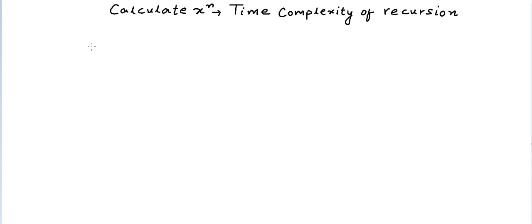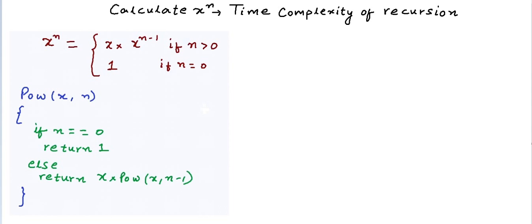The first approach we had seen was this: we defined the recurrence relation where we expressed x to the power n as x into x to the power n minus one, and n equals zero was our base condition. In the program, if n is zero, simply return one; else make a recursive call to calculate x to the power n minus one, multiply it with x, and return the output.